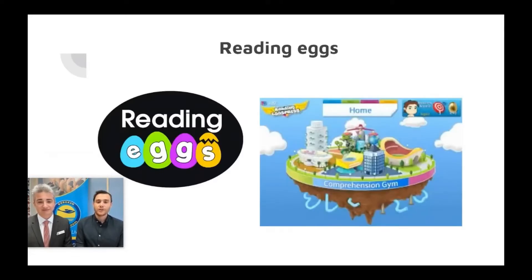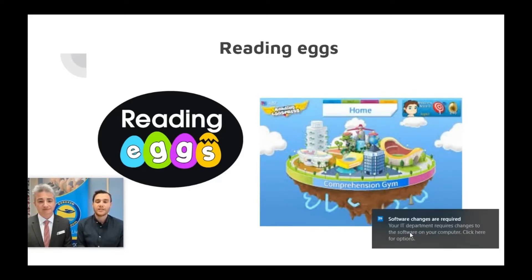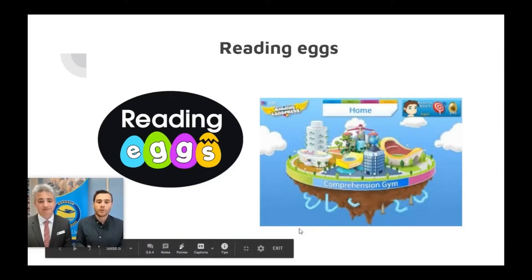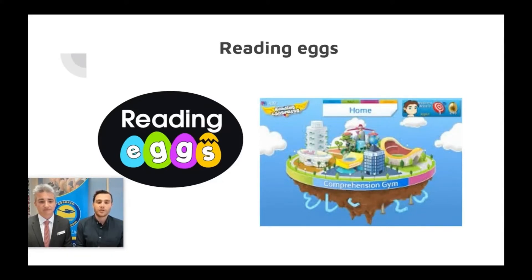Our next program is Reading Eggs, which is also a reading-based program. The K–2 focus is Reading Eggs and Years 3–6 is Reading Eggs Express. This focuses on teaching students comprehension strategies. At the start, students have a placement test that sets the level they work at, and they then work through a progressive sequence of 120 lessons covering comprehension strategies, as well as lots of fun spelling activities and games. Get yourself some headphones so students can use it at home — it's another highly engaging program.